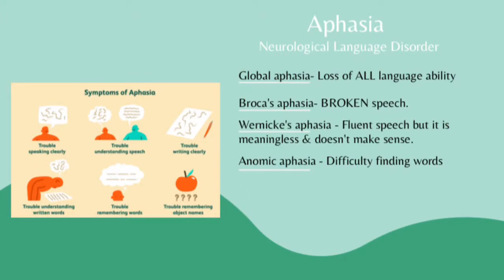Aphasia is a neurological language disorder, and there are four different types. The first is global aphasia — a loss of all language ability. I like to think of 'global' as meaning 'all,' since global means around the world and includes everybody. The next one is Broca's aphasia, which is broken speech. I like to think of 'Broca' and 'broken.' This is going to be slow, labored speech with frequent mispronunciation.